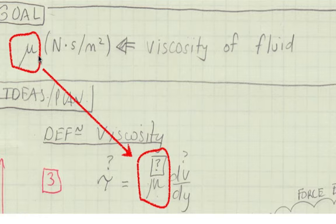Since the problem goal is to find viscosity, we ask a question. What equation do we know of that has viscosity as a variable? Well, the definition of viscosity contains our goal, so we mark viscosity in this equation with a boxed question mark.